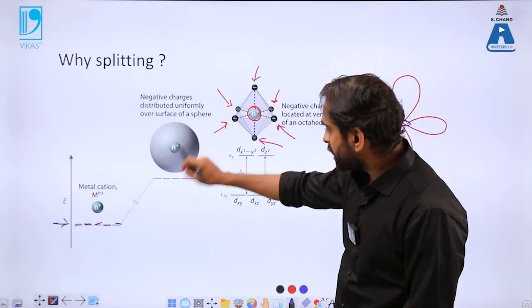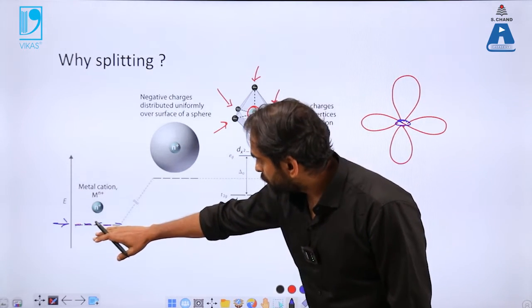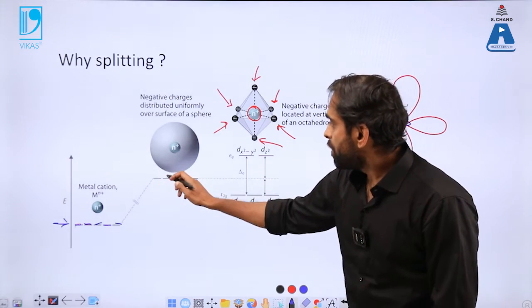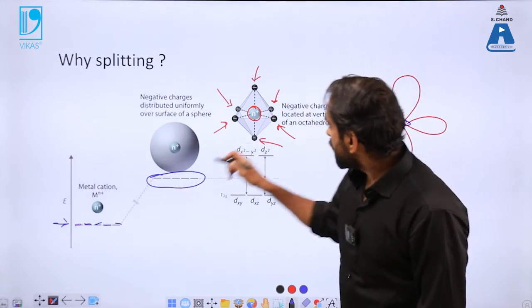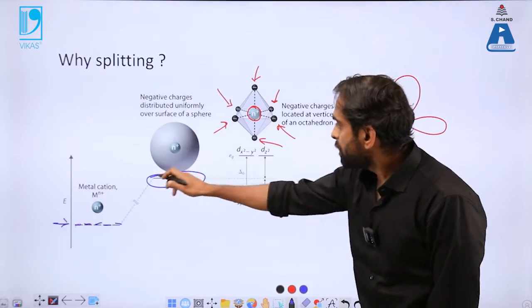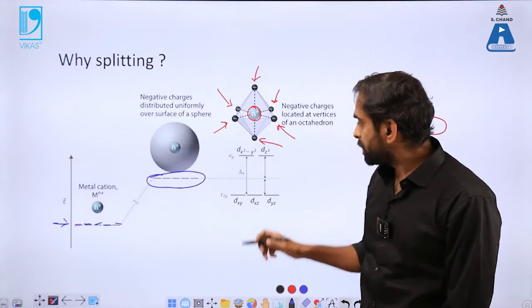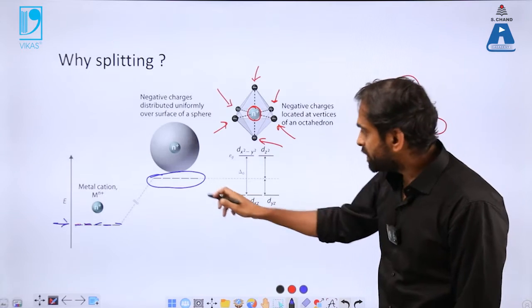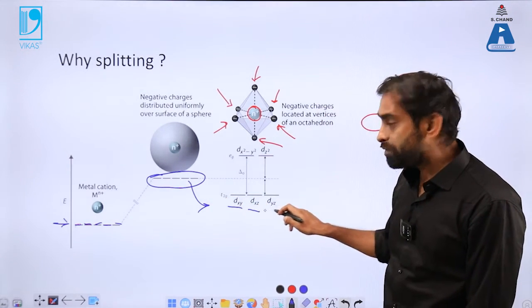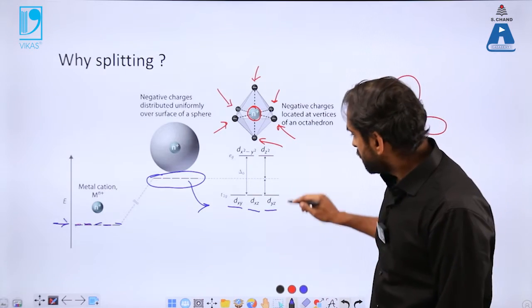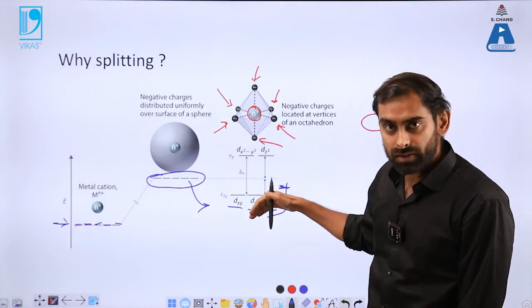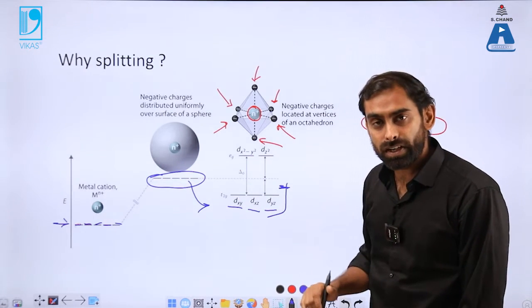So the moment when it interacted with the ligand, once it got activated, the energy slightly got elevated. But the interaction of ligands then split the energies of these five degenerate d orbitals into two parts. You can see here that three of them, dxy, dyz, and dzx, they now have relatively lower energy than the excited state degenerate d orbitals.